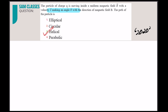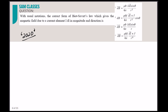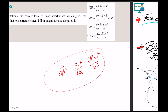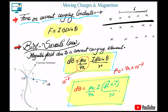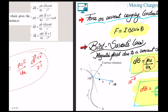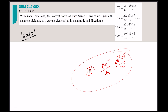The answer is helical path — a simple question directly from the concepts. Next: the correct vector form of Biot-Savart law. dB = (μ₀i/4π) × (dl vector × r̂) / r² or equivalently (dl vector × r vector) / r³. This vector form is very important and has been asked many times.